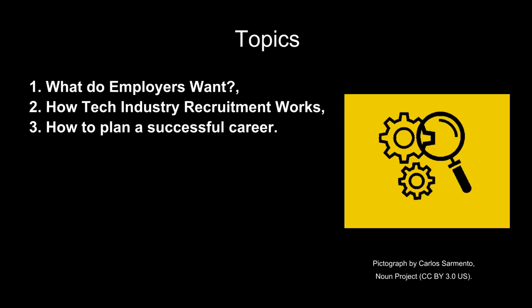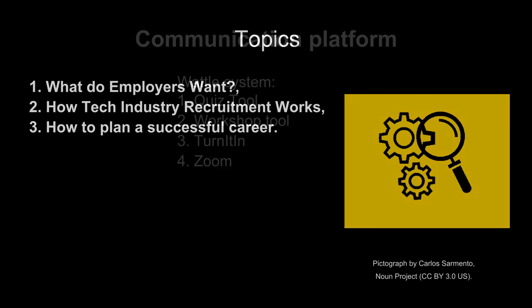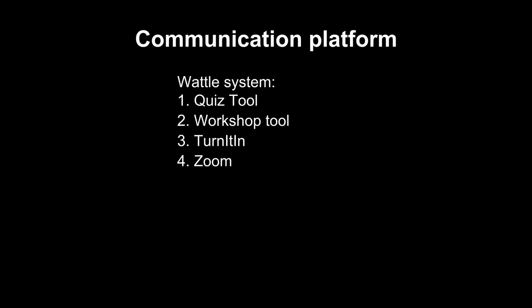The module consists of three parts, one topic per part, with one workshop for each. There are assessed tasks before each of the workshops. The three topics cover: What do employers want? How does tech industry recruitment work? And how to plan a successful career? This module uses the university's Wattle system for communication; the quiz and workshop tools are used for tasks, and Turnitin for the WPP assignment.